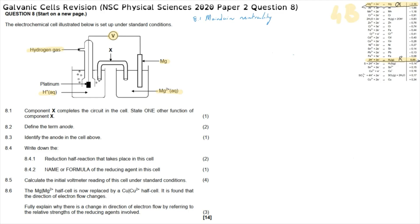Question 8.2 asks to define the term anode. An anode is always the electrode where oxidation takes place — that is the definition per the guideline document. A useful memory device: 'An Ox' — anode is always where oxidation takes place. Question 8.3 asks to identify the anode in the cell. Since the magnesium half reaction is the oxidation half reaction, the anode is magnesium (Mg).